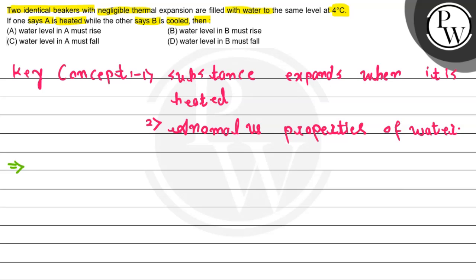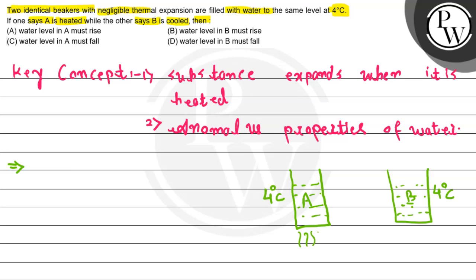So the question says we have two identical beakers. Both are at 4 degrees Celsius. Now, beaker A is being heated and beaker B is being cooled — meaning we are placing beaker B into an ice bath. We need to find out what will be the effect on the water level in both beakers.